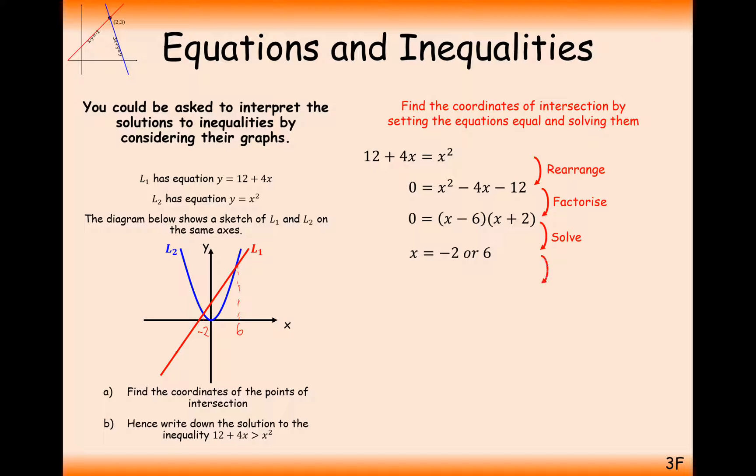We need to find the coordinates of where they intersect, so finding each of the y values that correspond to these x coordinates. We get y is 4 for the -2 solution and y is 36 for the 6 solution. So we get the coordinates of (-2, 4) and (6, 36).